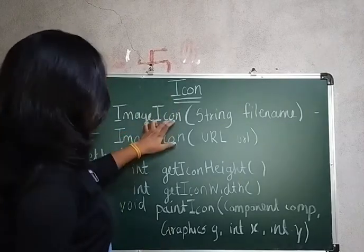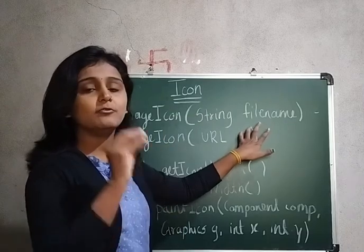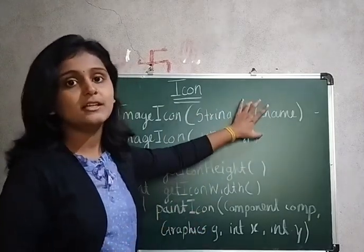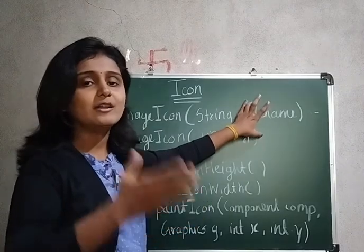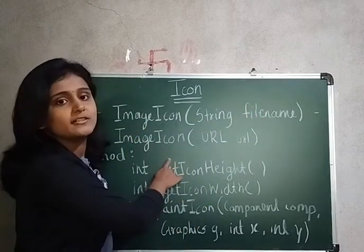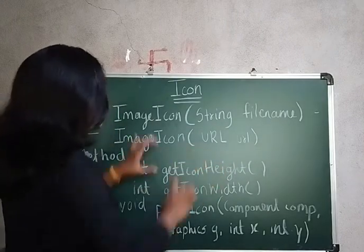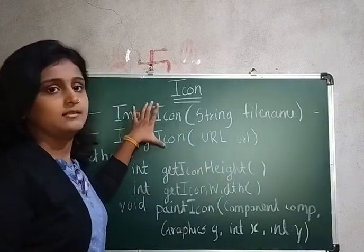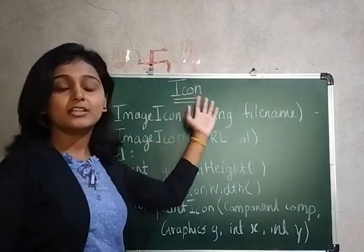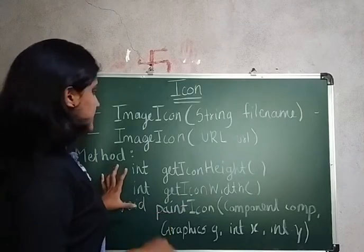Now regarding ImageIcon, here are some of the constructors. First, you can pass the image in the form of a file name — whatever the name of the file is, you can mention it here and add it to a particular component. The next constructor lets you specify the URL of a particular image icon. So these are the two constructors of the ImageIcon class which implements the Icon interface.